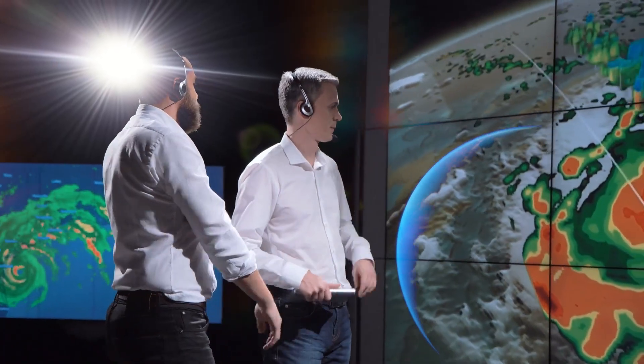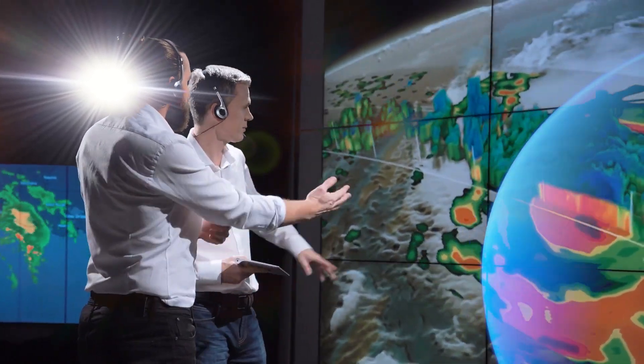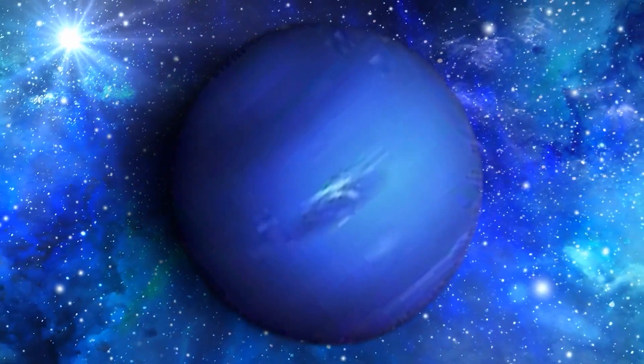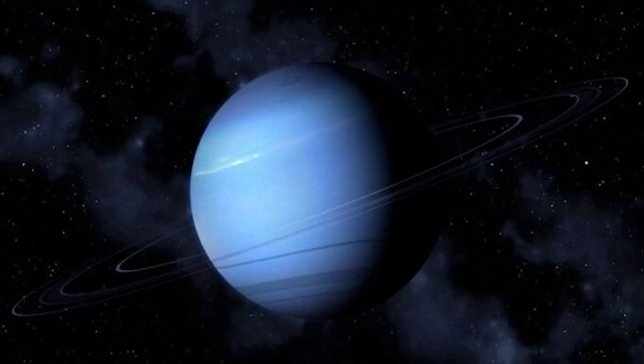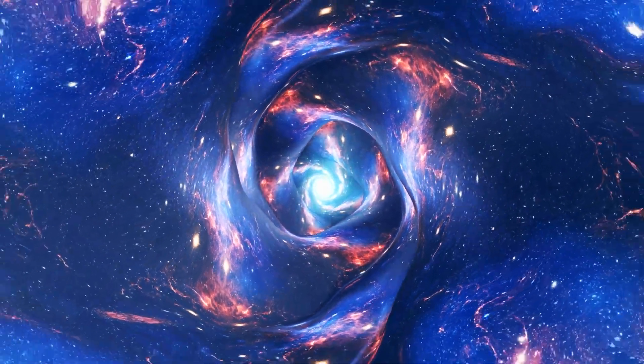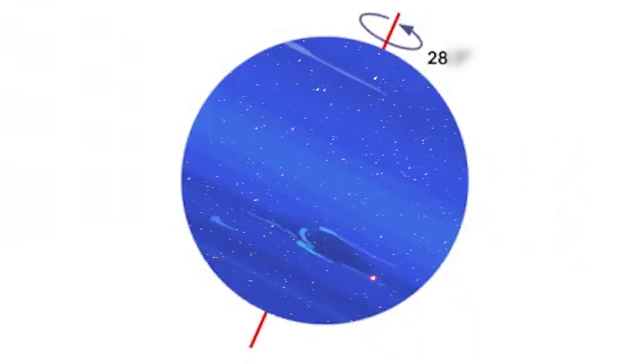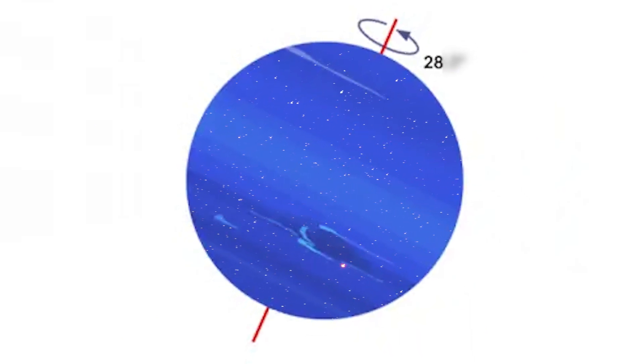While some researchers remain skeptical of Neptune's oceanic potential, positing a mere 15% probability, others speculate that the likelihood increases to 40% in a billion years once the giant cools down. Yet the energy radiating from Neptune, nearly three times greater than its solar intake, hints at a cosmic mystery waiting to be unraveled, further amplified by its peculiar 28-degree tilt axis, akin to Earth's own.